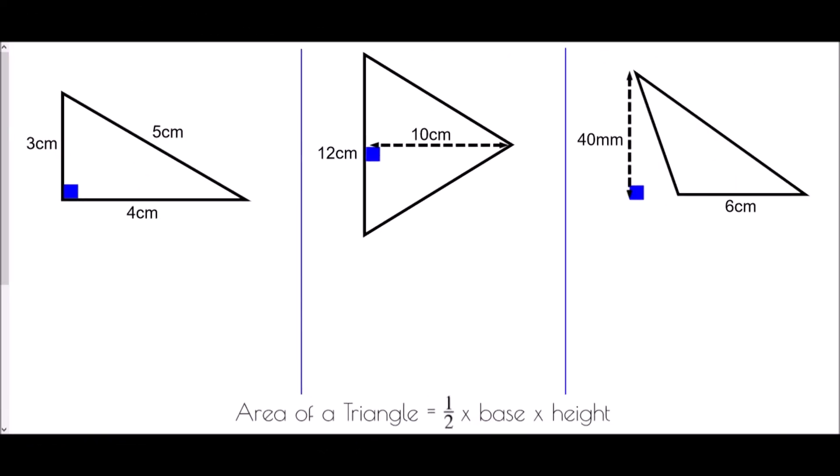The next set of examples show different types of trick you might see in a question about finding the area of a triangle — things people often make mistakes with because they haven't noticed all the key information. Each of them still begins with the formula: area of a triangle equals a half times base times height.